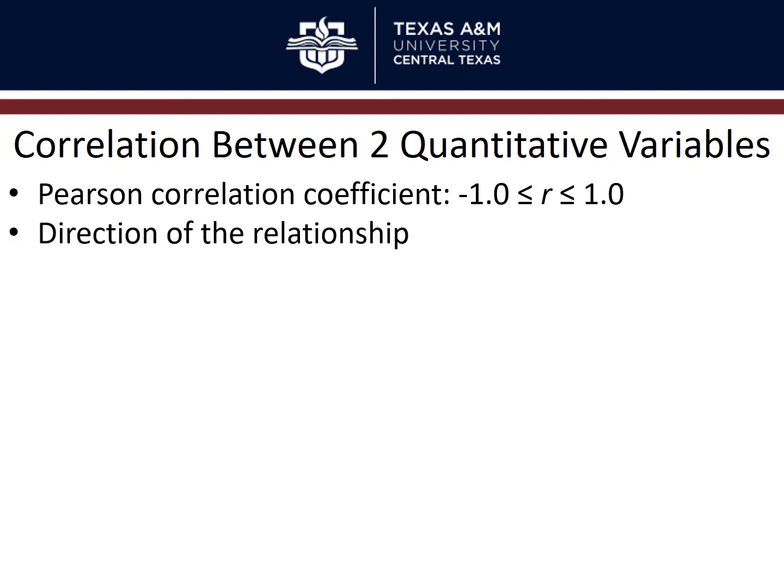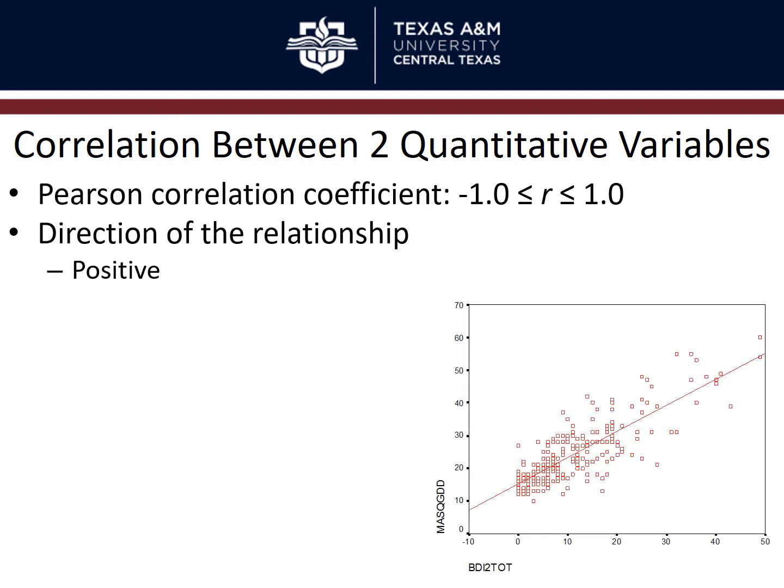The correlation coefficient tells you two things: the direction of the relationship and the strength. If it's a positive relationship, values above the mean on one variable tend to be above the mean on the other. Lower scores on one are associated with lower scores on the other — they co-vary in the same direction. You don't typically see a plus sign; if someone reports r = 0.2, positive is assumed. If it's negative, there will be a negative sign indicating an inverse relationship.